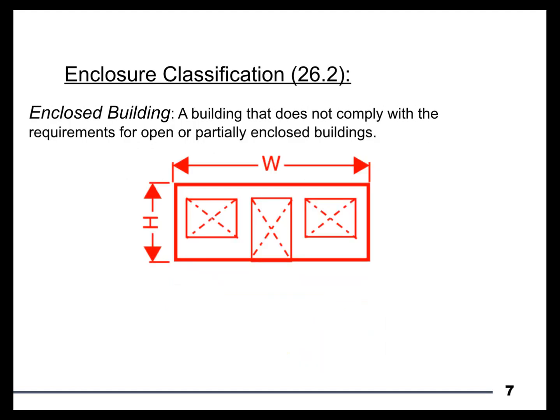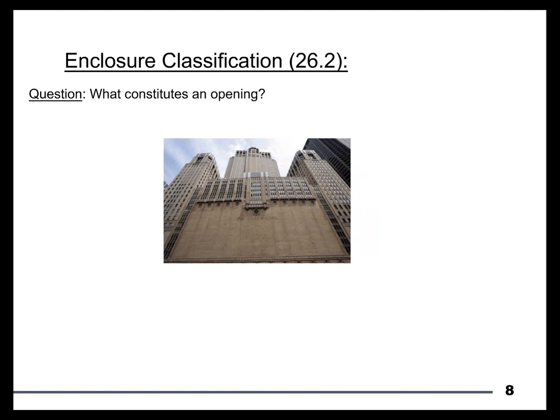As the code often does, an enclosed building is defined by exclusion: if it's not open and it's not partially enclosed, then it is enclosed. Unfortunately, most of our buildings are enclosed, so it's a bit of a disadvantage that we have to go through that flowchart process of checking for an open building, checking for a partially enclosed building, and if neither applies, we qualify as enclosed. There is no affirmative definition for an enclosed building — it's simply one that is not open and not partially enclosed.